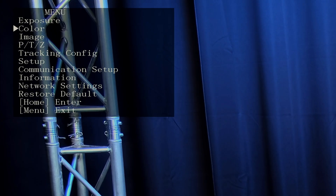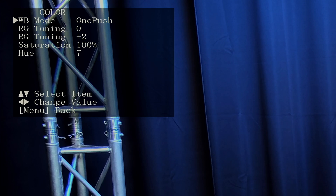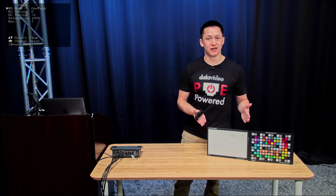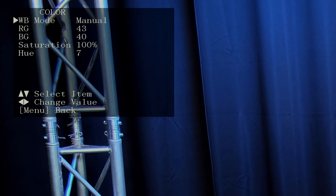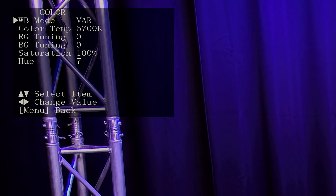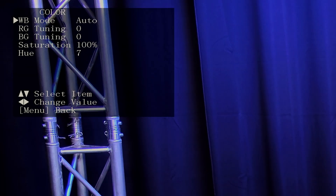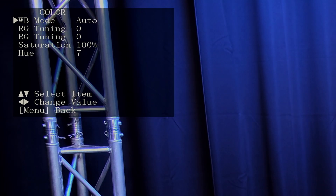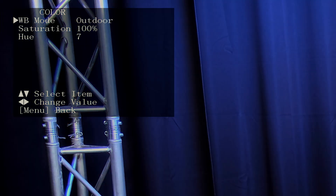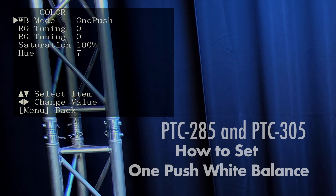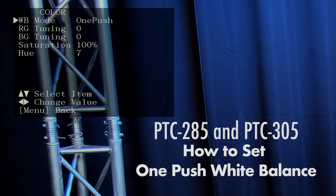Moving down to color, it's best to use a one push white balance setting on a white card that you have in your scene. You can also use settings like manual, variable, or auto white balance. You can also do indoor — which obviously wouldn't work here — and then outdoor. One push works best.